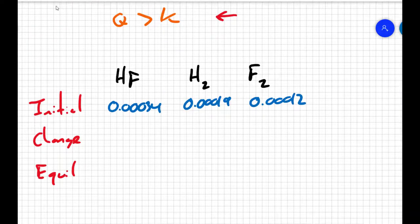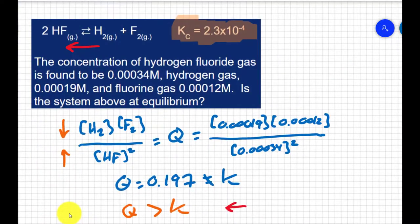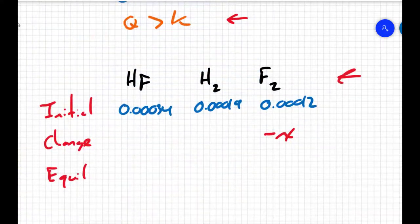Now let's talk about change. Well, we said that the reaction is going to shift to the left. That means my products, the hydrogen and the fluorine, are going to decrease, and the HF is actually going to increase. So I'm going to say the fluorine is going to decrease by some amount. I'll call that X. Well, if we look at our balanced equation, the fluorine and the hydrogen react at a one to one ratio. So however much the fluorine decreases, the hydrogen will decrease by the same amount.